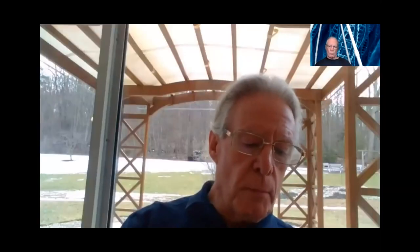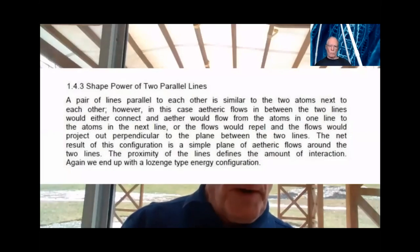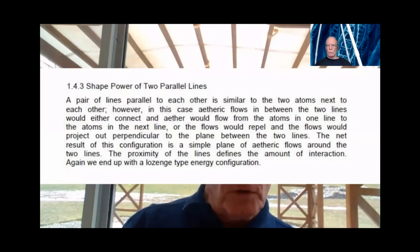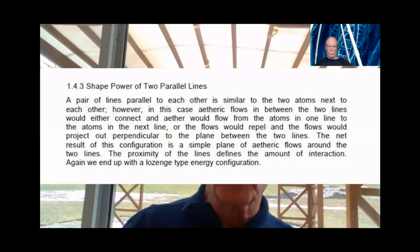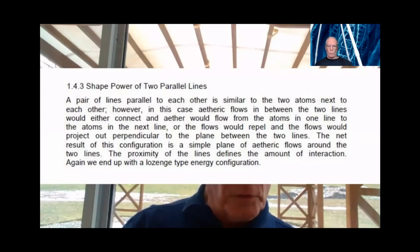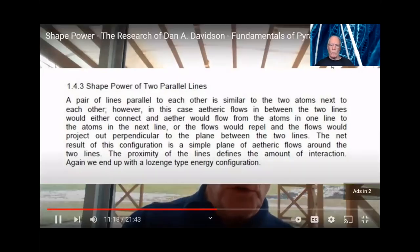Now we move on to the shape power of two parallel lines. A pair of lines parallel to each other is similar to two atoms next to each other. In this case, etheric flows between the two lines would either connect, with ether flowing from atoms in one line to atoms in the next, or the flows would repel and project out perpendicular to the plane between the two lines. The net result is a simple plane of etheric flows around the two lines, with proximity defining the amount of interaction, and again forming the lozenge-type energy configuration.